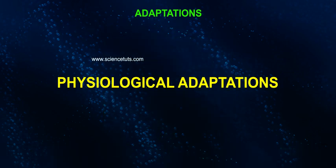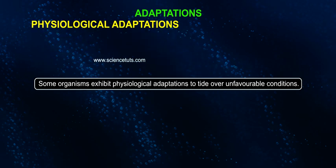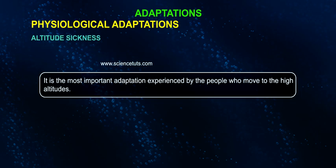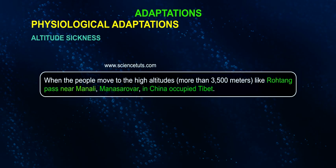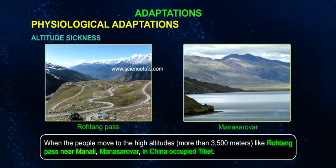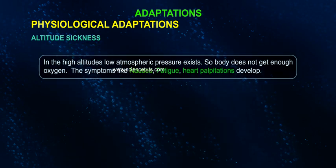Physiological Adaptations: Some organisms exhibit physiological adaptations to tide over unfavorable conditions. Altitude sickness is a most important adaptation experienced by people who move to high altitudes above 3,500 meters, such as Rohtang Pass near Manali and Mansarovar in China-occupied Tibet. At high altitudes, low atmospheric pressure means the body does not get enough oxygen.